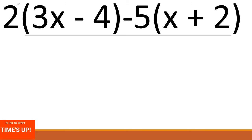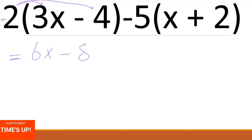Let's answer now. Step 1: multiply 2 by 3X, and 2 by 4. So 2 times 3X gives 6X. And 2 times 4: we keep the negative sign, so positive times negative is negative 8. Then for negative 5 times X and negative 5 times 2: negative times positive is negative, giving negative 5X. Negative times positive gives negative 10.